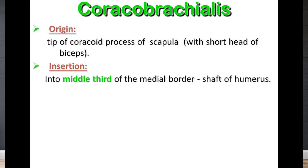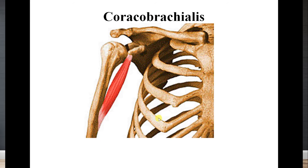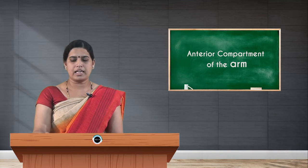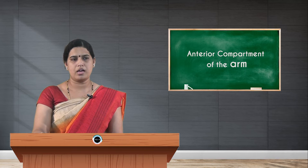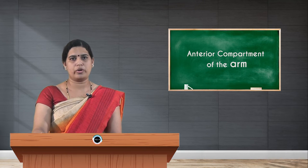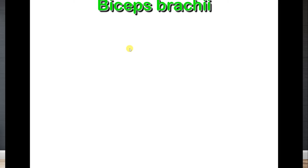The nerve supply is the musculocutaneous nerve, the nerve of the compartment. Coracobrachialis acts as a weak flexor of the shoulder joint and also as an adductor of the shoulder joint. It is the smallest muscle in the anterior compartment of the arm. You can see in the picture that it originates from the tip of the coracoid process, passes downwards to the medial border of the shaft of the humerus, and the muscle is pierced by the musculocutaneous nerve.